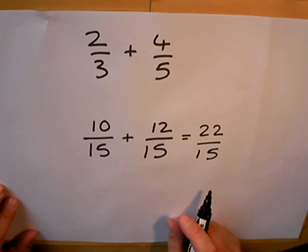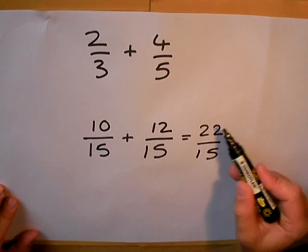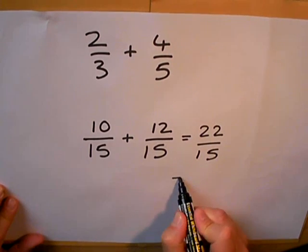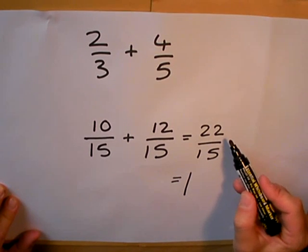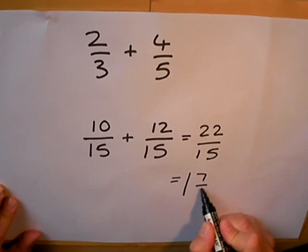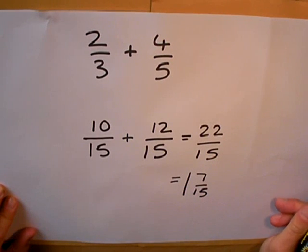Because this is a top heavy fraction I can make a mixed number and I should write that as my answer. Remember, 15 fifteenths makes one whole one. I have enough to make one whole one, but if I use up 15 fifteenths that leaves me with 7 fifteenths left over, and there's my answer.